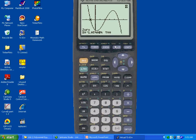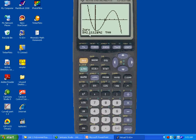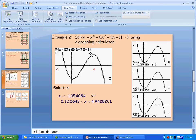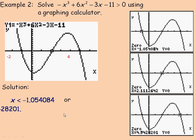To find the next zero, go to Second, Calculate again and select function number two. Scroll to a point a little left of that zero, press Enter, go past it, press Enter, then Enter again for the guess. It tells us that zero is at about 2.11. So where is the function positive? It's positive to the left of negative 1.05, so x is less than negative 1.05. The other part is between 2.11 and 4.94, so x is between approximately 2.11 and 4.94.